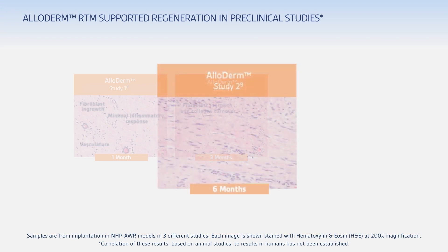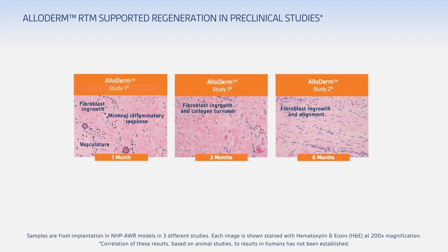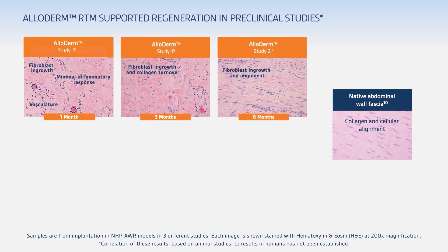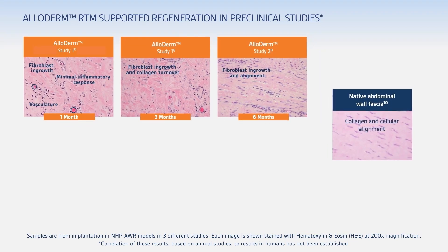In this image, taken at six months in another preclinical animal study, we see further alignment of collagen and fibroblasts due to the mechanical forces of the adjacent abdominal wall being applied to the implant. This indicates turnover of the matrix to a more fascia-like architecture, the transition into host tissue that we're looking for.